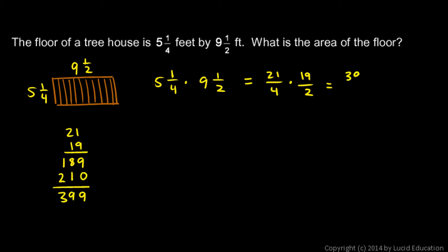So I have 399 in the numerator. And in the denominator here, 4 times 2 clearly gives me 8. So that's my answer, 399 eighths. That's not an easily understandable answer, though. So let's convert this back to a mixed number.